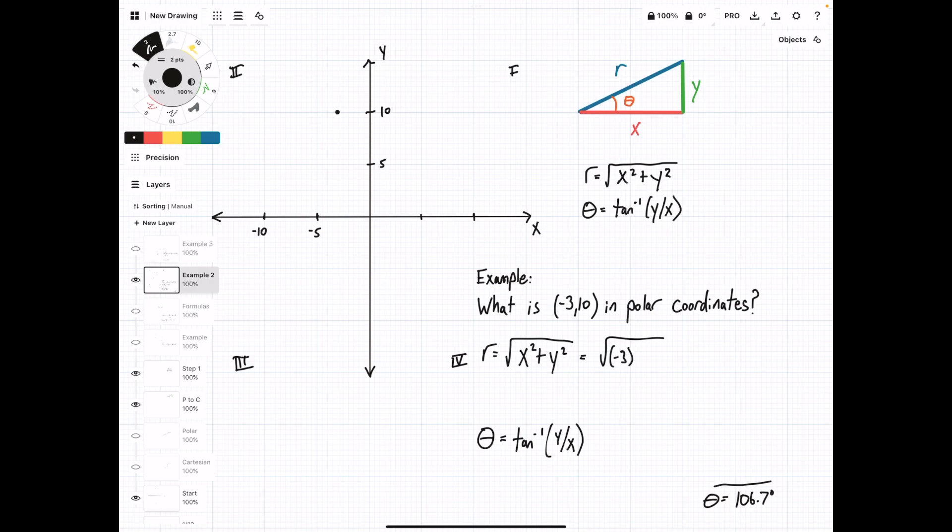We plug in what we know. This is going to be negative 3 squared plus 10 squared equals square root of 9 plus 100, square root of 109, and this is going to equal 10.4.